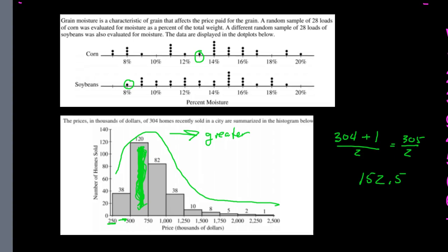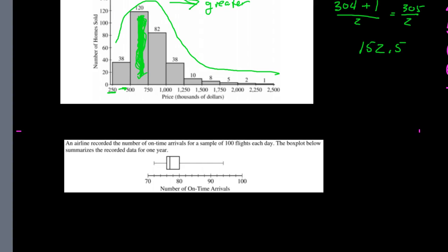Now let's look at a box plot. This one shows the number of on-time arrivals for a sample of 100 flights each day over one year — so they looked at 365 days. The line in the middle is your median, which looks to be about 77. This graph is skewed to the right — you can see the tail on the right side is more spread out.